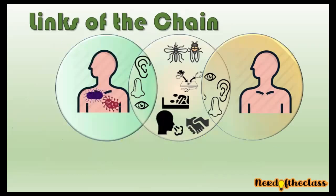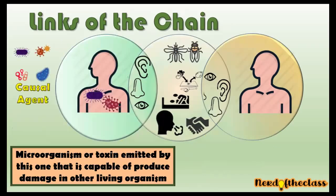Let's talk first about the causal agent. The causal agent is a microorganism — being bacteria, virus, fungi, parasite — or a toxin that is emitted by one of these that is capable of producing damage in other living organisms. It's capable of producing disease in other organisms.